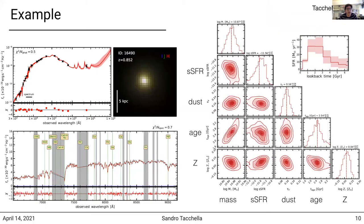I'll show you here the resulting fit for one of our example galaxies at redshift 0.49. You can see on the top left the photometry, which is well fit by the red line — our model. On the bottom I show you the spectrum. The photometry extends across the full wavelength range from the UV to the mid-infrared, while the spectrum covers the optical part. On the right you can see the resulting posterior distribution for the metallicity, stellar mass, specific star formation rate, dust, and age. On the top right you can see the star formation history: this galaxy had an increasing star formation history at early times, was plateauing about one to three gigayears ago, and then declined quite rapidly in the last gigayear.